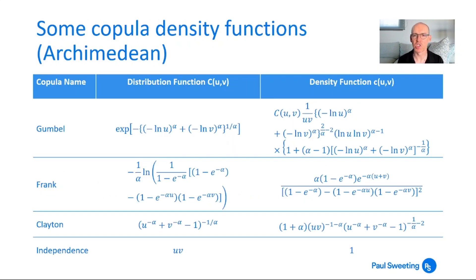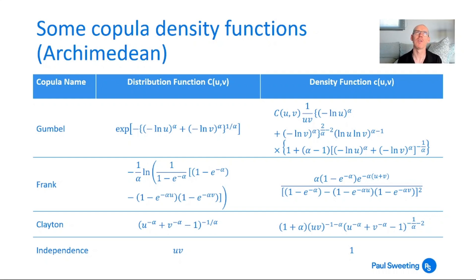Copula density functions are often quite involved. For the Archimedean ones — you can see the Gumbel one has the copula distribution function appearing as a term within the density, so these are not simple functions to work with. Frank and Clayton are a little more tractable, but they're still quite lengthy. I've also included the independence copula, where the distribution function is C(u,v) = uv and the density function is just one. As we'll see, if we can make the simplifying assumption that conditional copulas are independence copulas, that can really simplify our workload — the fact that the copula density for the independence copula is one can make life an awful lot easier.